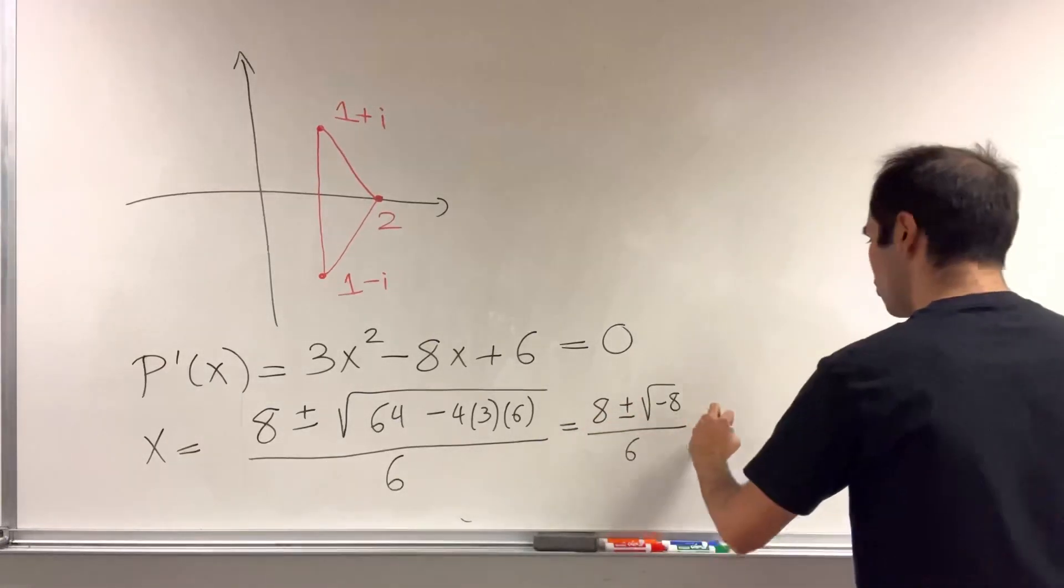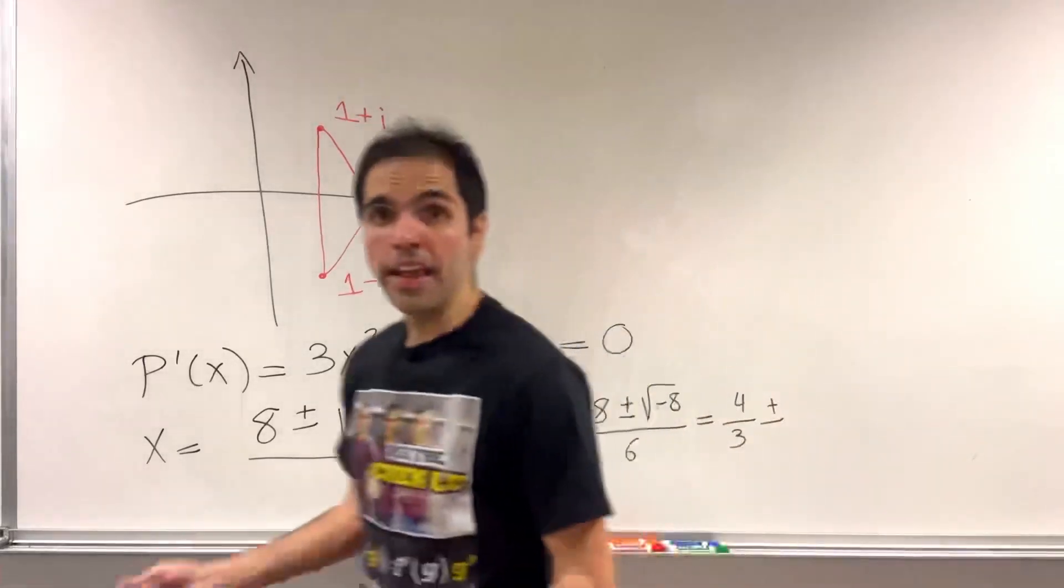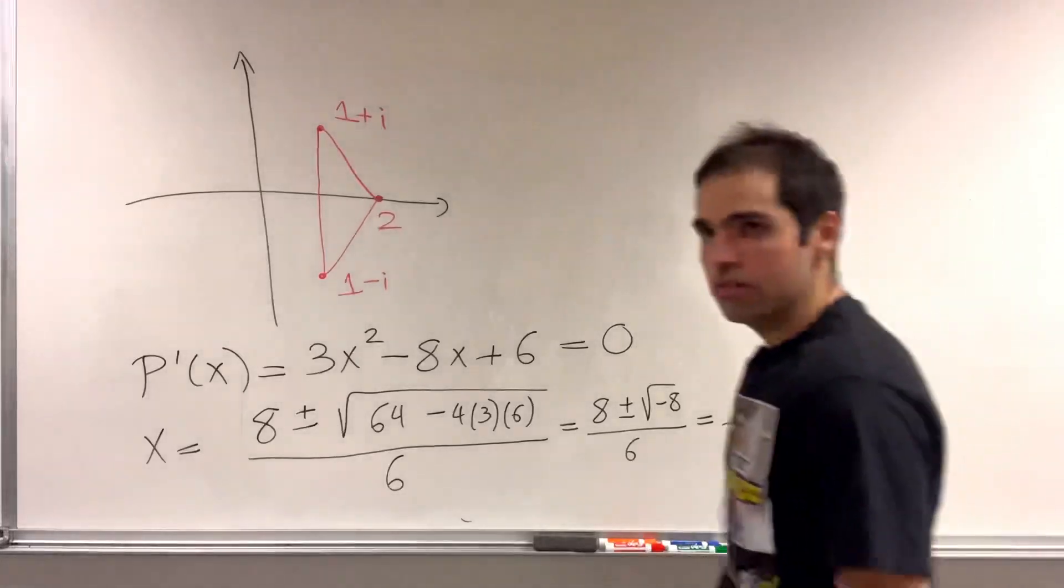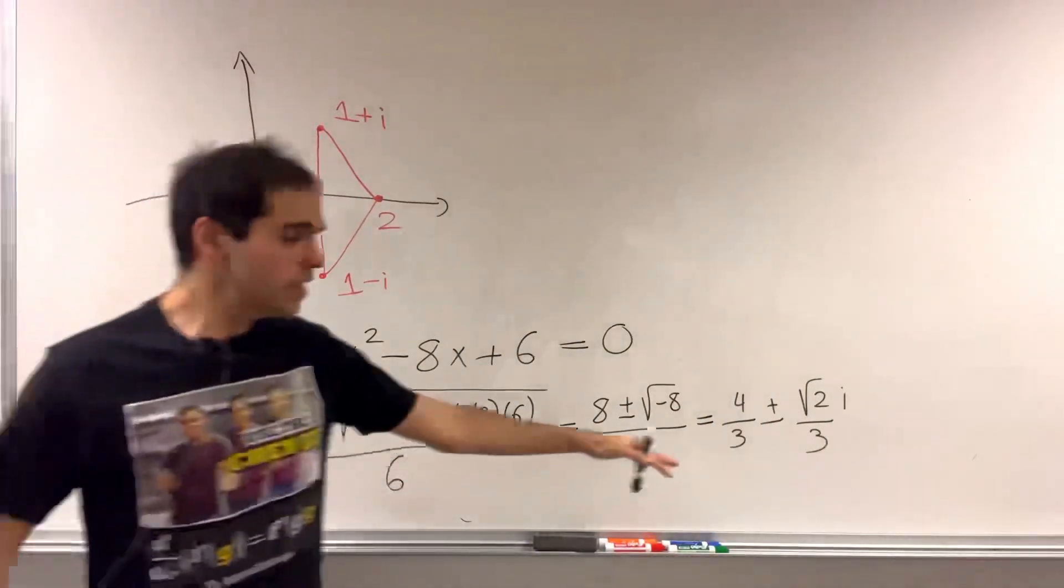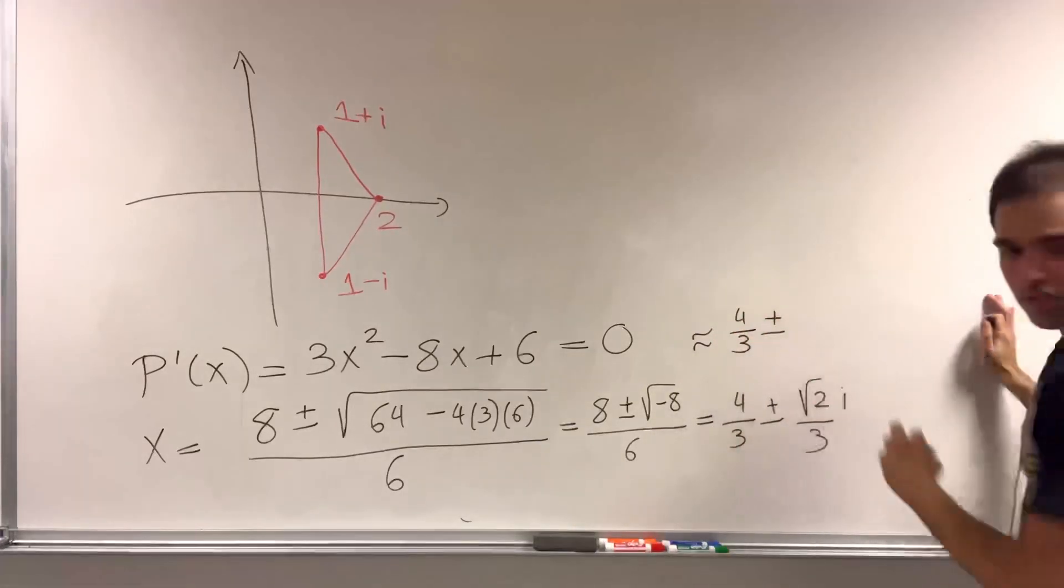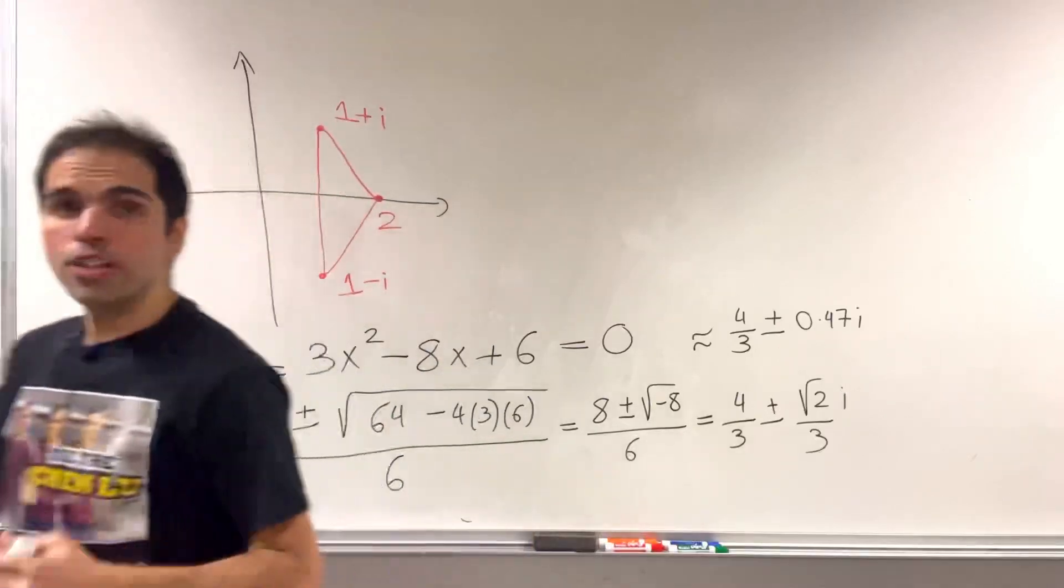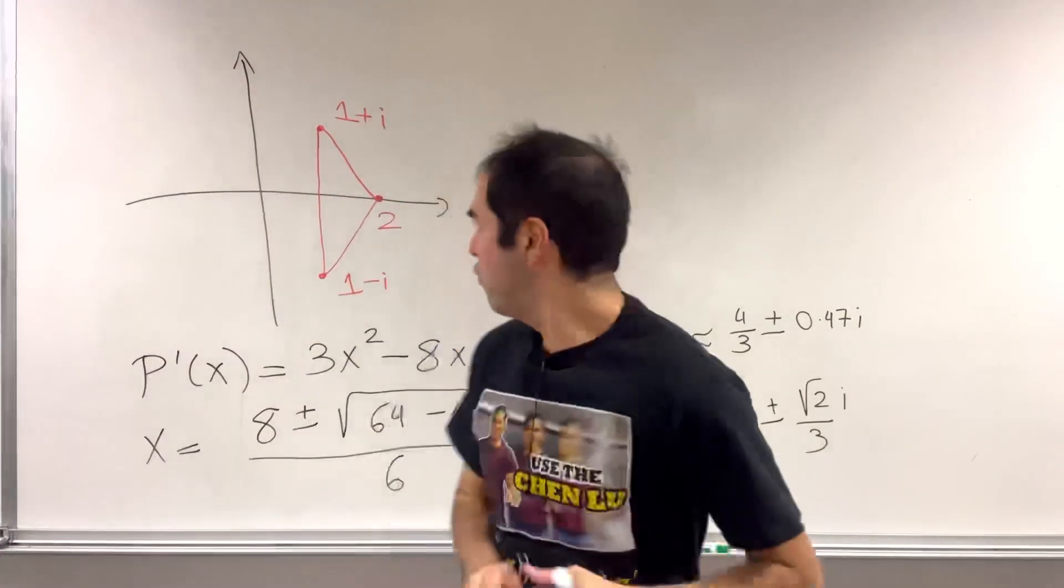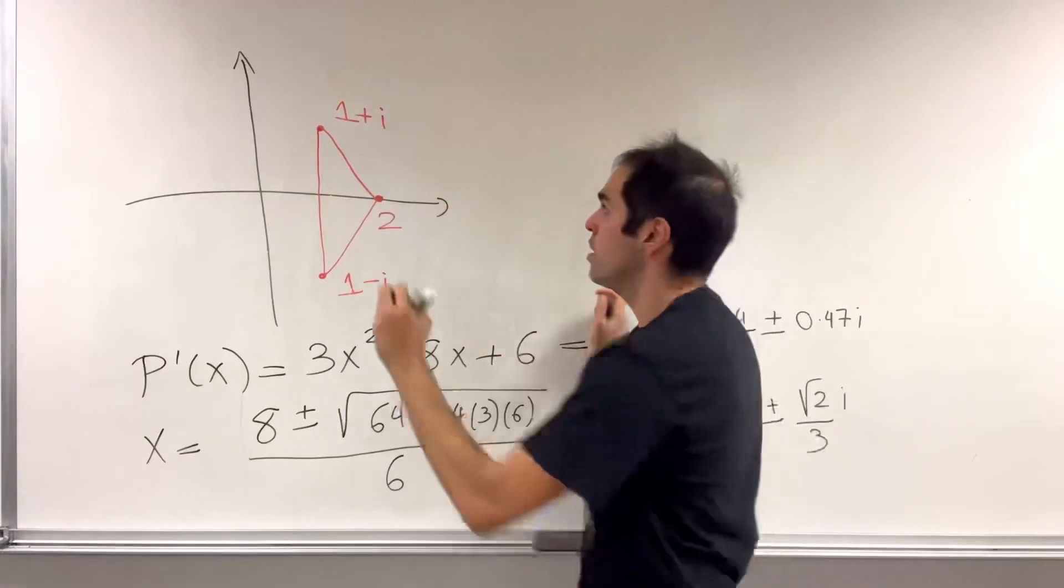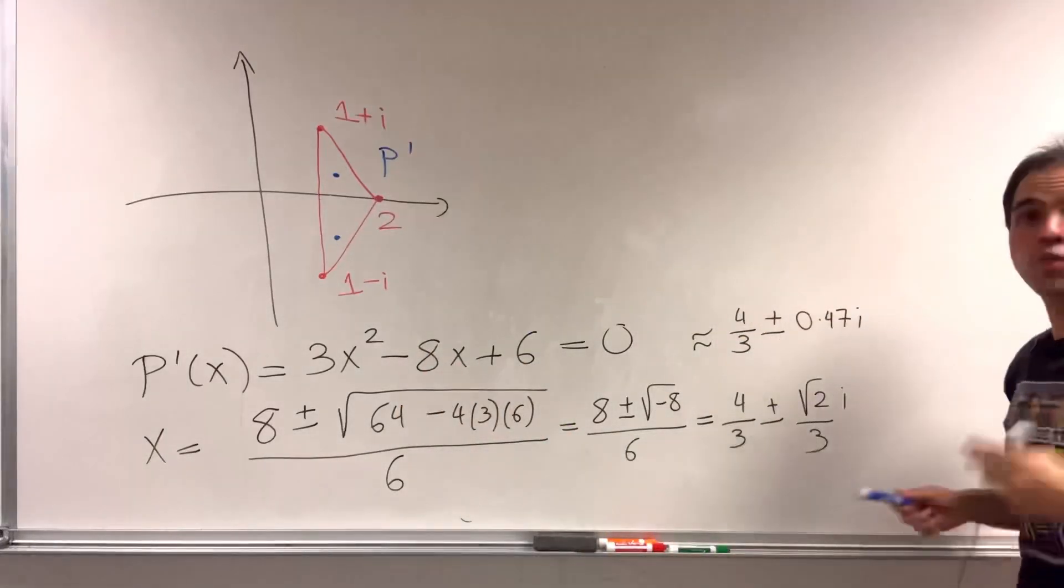Which then gives you, well, 8 sixths is 4 thirds, then ± 2√2 i, which then gives you √(1/3 × 2i) over 3, because again, 2 sixths is 1 third. And in case you're curious what this is approximately equal to, well, this is roughly 4/3 ± 0.47i, which actually helps us plot the root, because 4/3, it's slightly bigger than 1, maybe here, and then 0.47, well, you don't go that much higher, so it's probably somewhere here, that's one root, and this is the other root. And those are precisely the roots of P'.